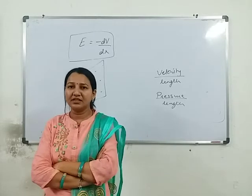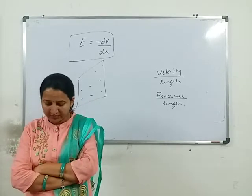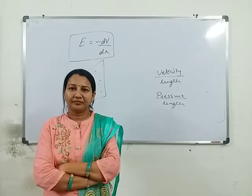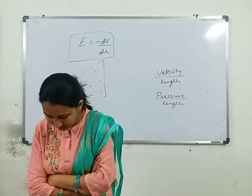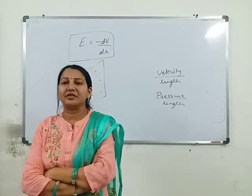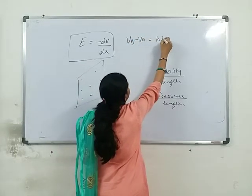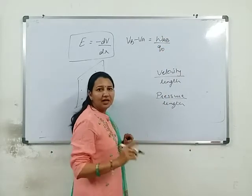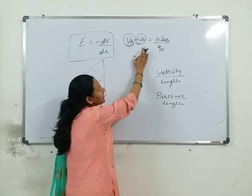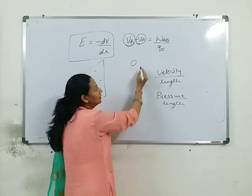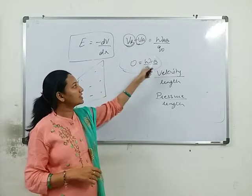Properties of equipotential surface. First: no work is done in moving a test charge over an equipotential surface. Using the formula V_B minus V_A equals W_AB upon q_0 — since potential at A equals potential at B on an equipotential surface, V_B minus V_A equals zero, so work done W_AB equals zero.